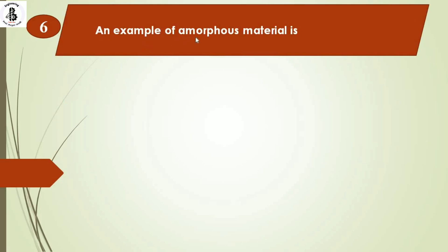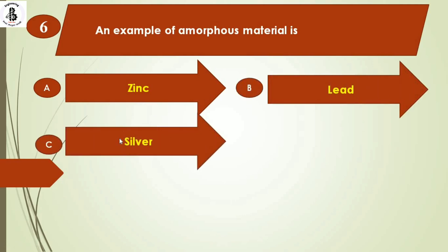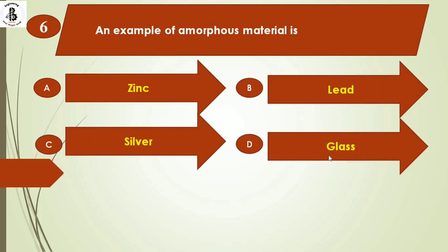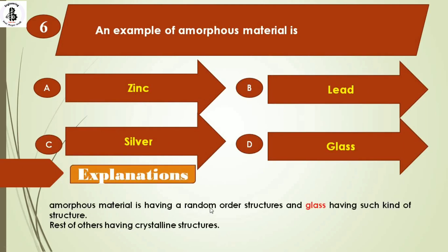The next question: an example of an amorphous material is option A) zinc, option B) lead, option C) silver, option D) glass. Amorphous materials have a random order structure, which is observed in glass. Zinc, silver, and lead have a crystalline structure. Amorphous materials act as non-crystalline structures, so the right answer is option D, glass.